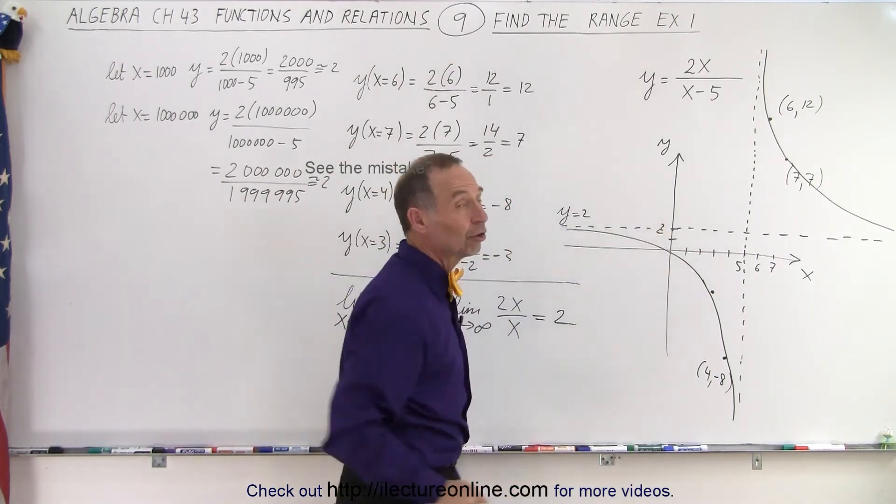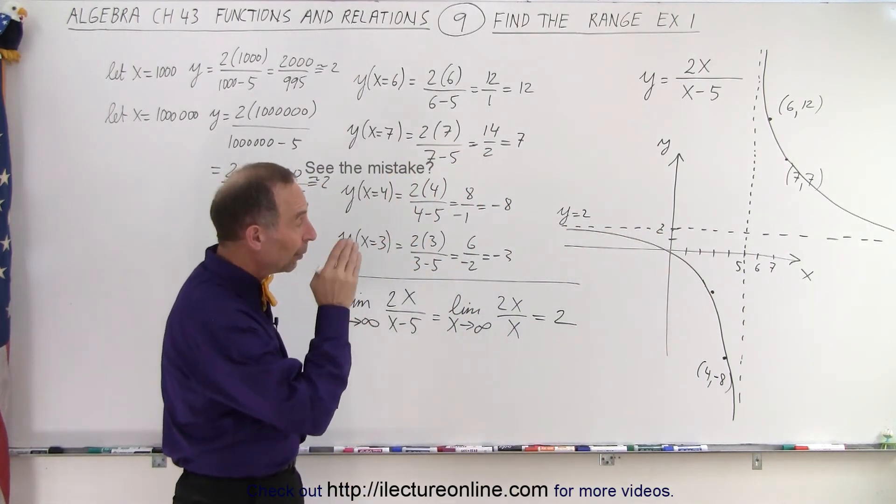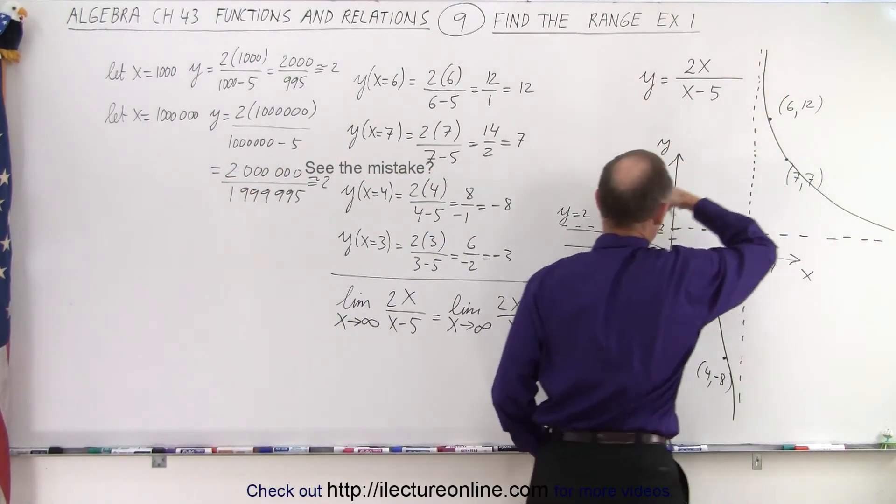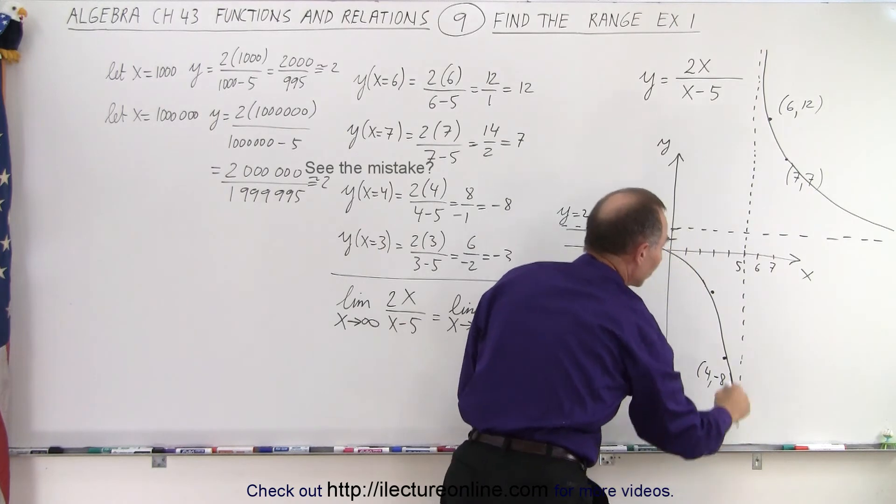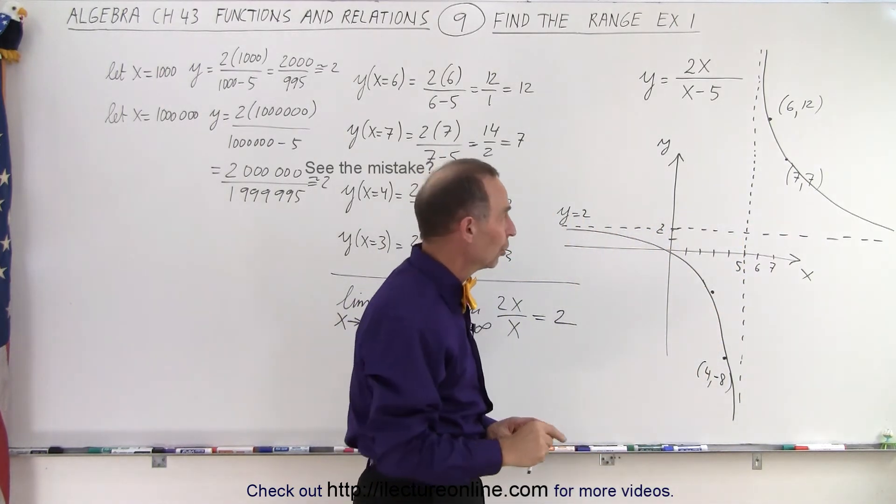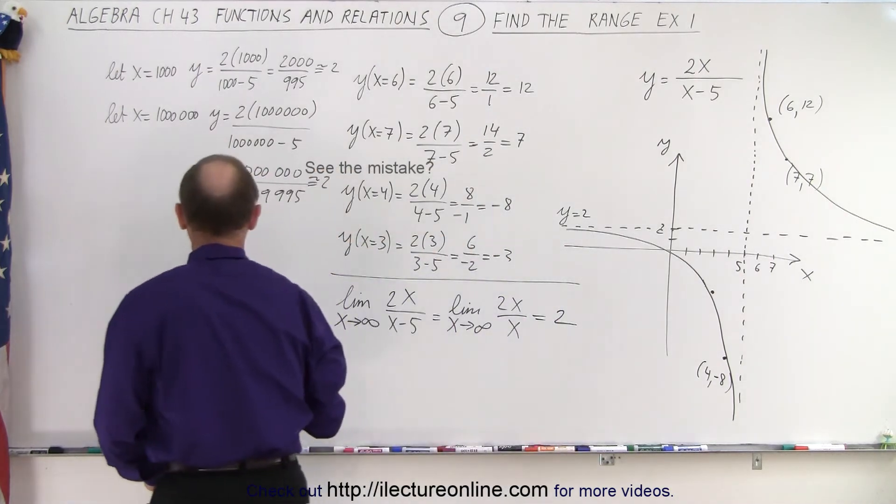That's what that function looks like. Now, we realize that y can become as big as it wants to be in this direction, as small as it wants to be in this direction, but there's one value that y cannot be, which is y equals 2, and therefore, we cannot write that the range...